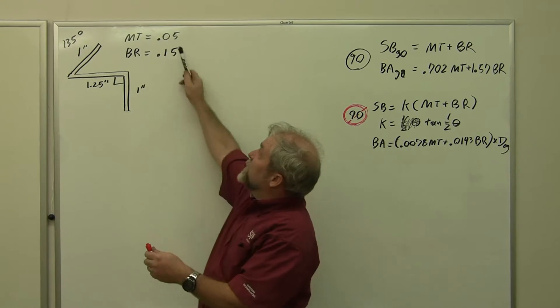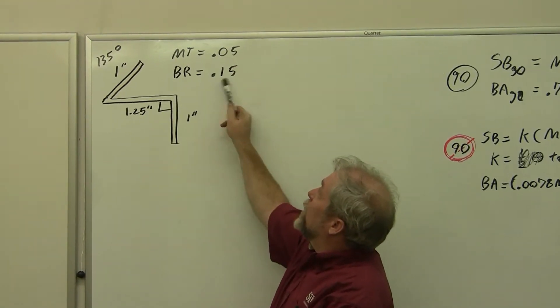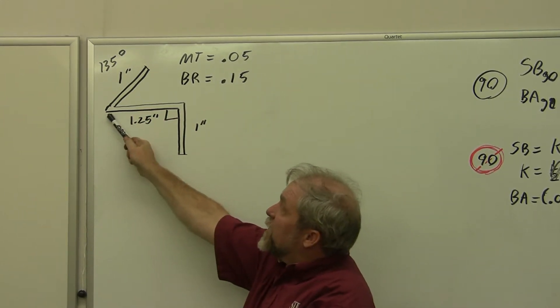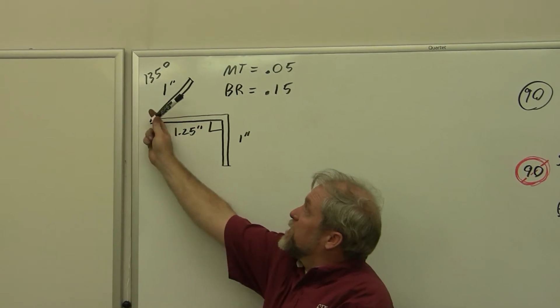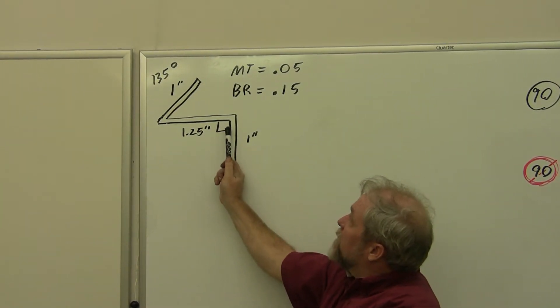We have a piece of material 0.05 inches thick with a bend radius of 0.15. It's got a one inch flat, 135 degree bend, more than 90 degrees, one and a quarter inch flat, then a 90 degree bend.